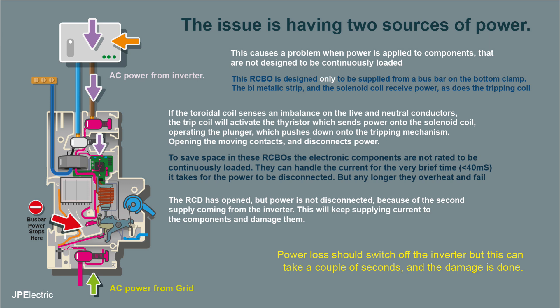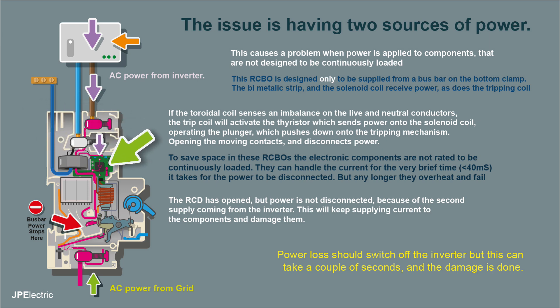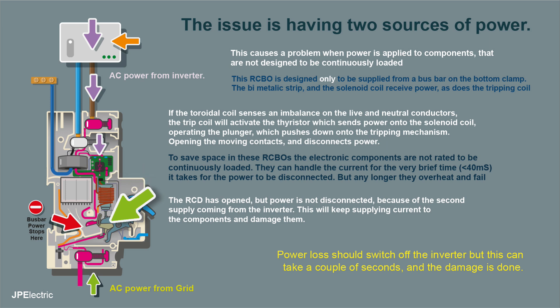Let's have a quick look at how the RCBO works. If the toroid coil senses an imbalance on the live and neutral, the trip coil will activate the thyristor, which sends power onto the solenoid coil, operating the little plunger, which pushes down on the tripping mechanism, opening the moving contact and disconnecting power.